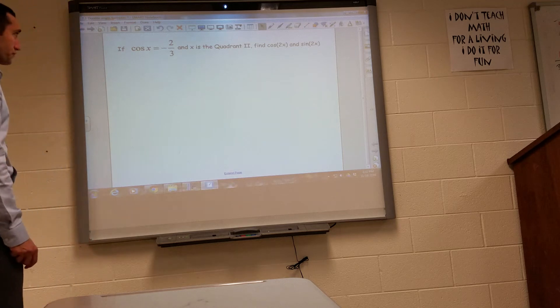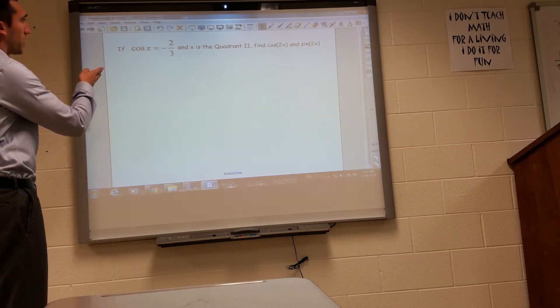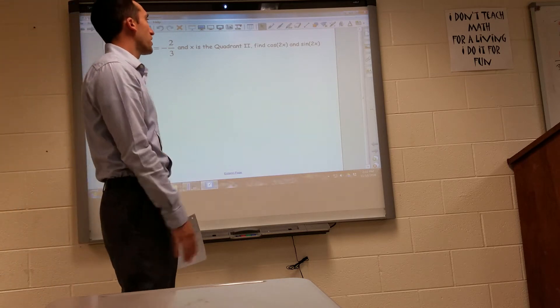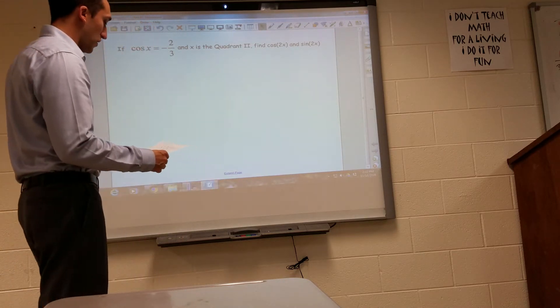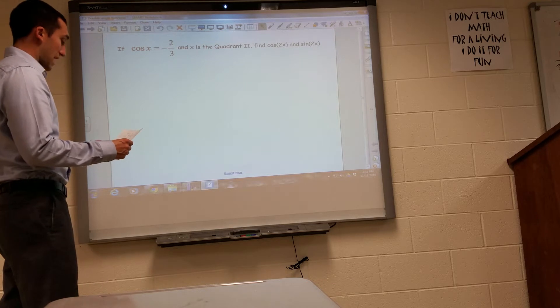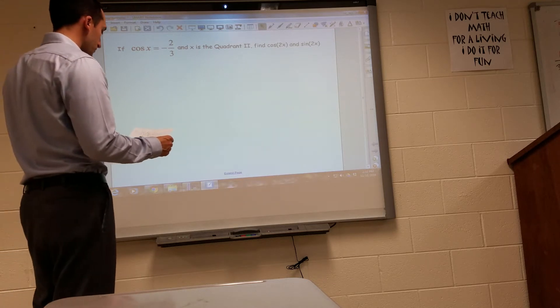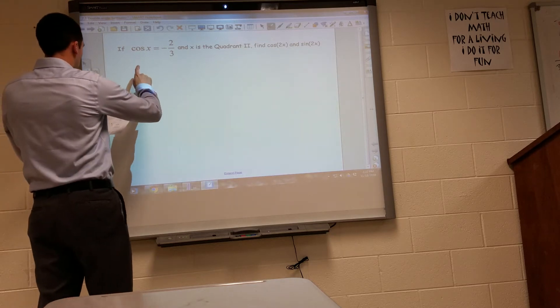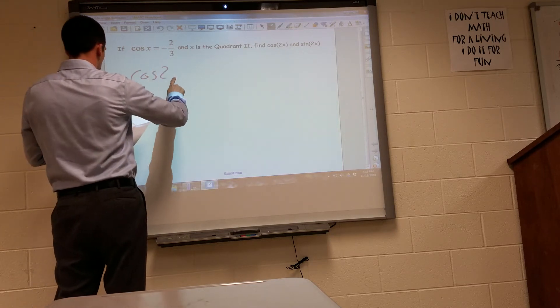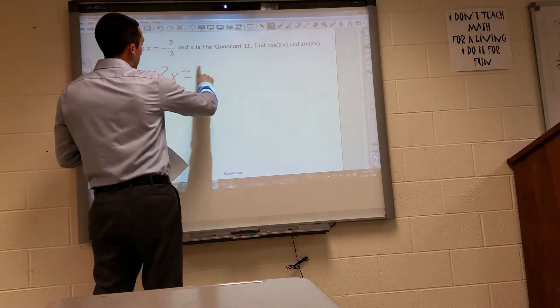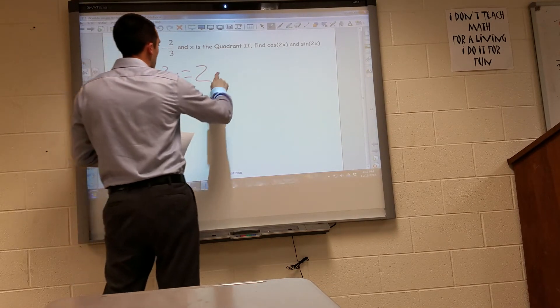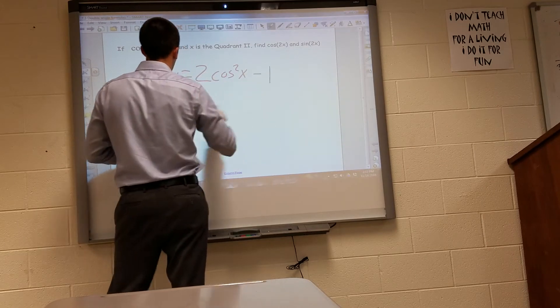So first thing they want to do, they tell us cosine of x equals negative two-thirds, where in the second quadrant they want us to find cosine of 2x and sine of 2x. So first thing I'm going to do, define cosine of 2x. That is, if you go back and look at your reference sheet or go back and look at the equations, 2 times cosine squared of x minus 1.